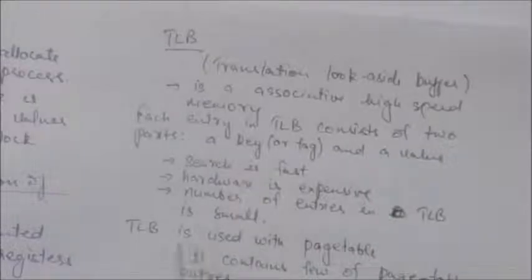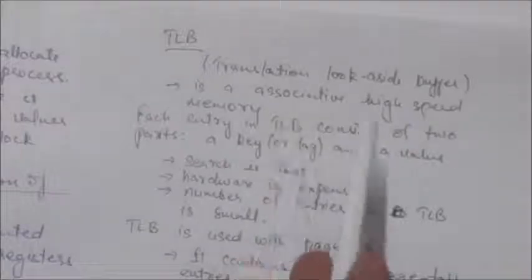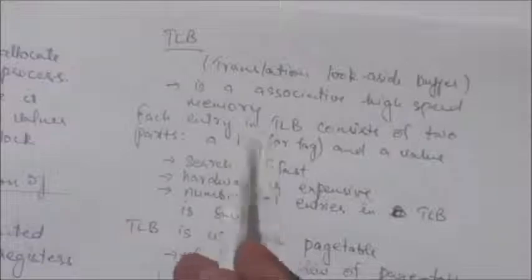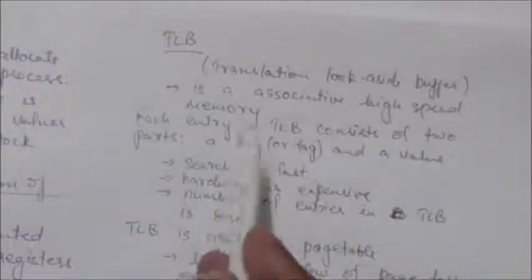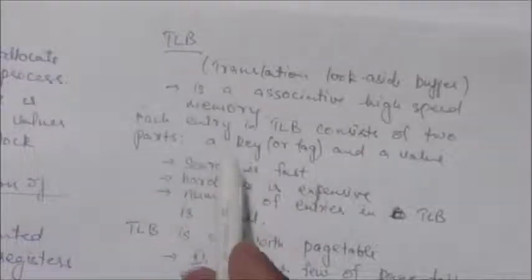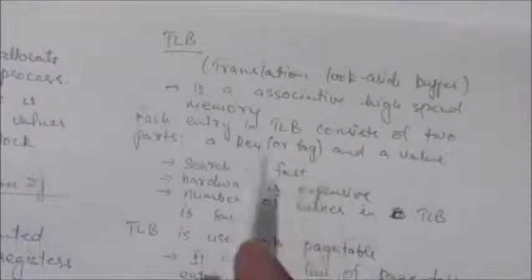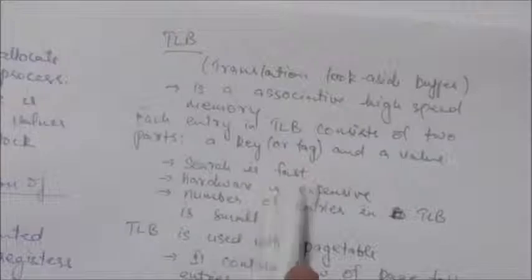If any key matches the presented item, the corresponding value is returned. In TLB, the search is fast; however, the hardware is expensive and the number of entries in TLB is small. TLB is used with page tables.